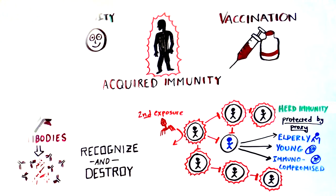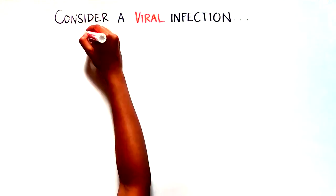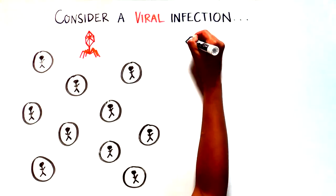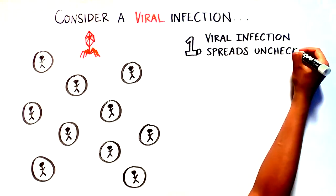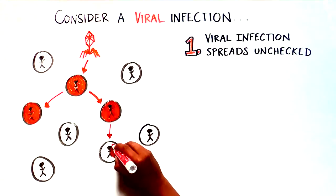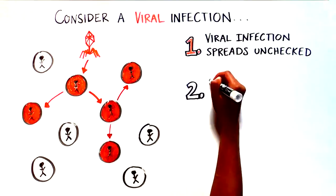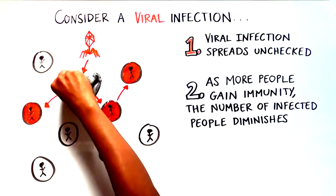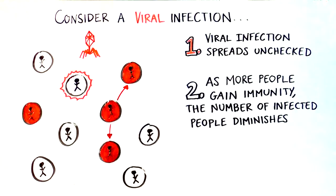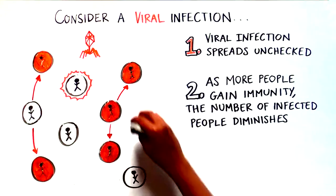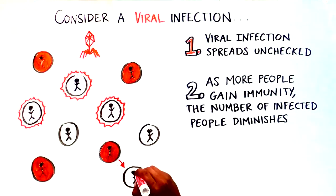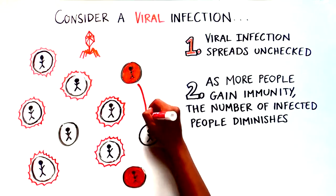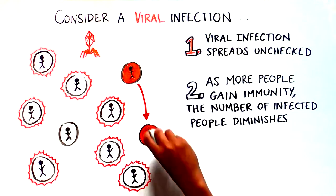Let's take a look at this idea visually, considering a viral infection. When a new virus enters a population with no immunity, it can spread unchecked because the people in that population don't have the protective antibodies. As more people gain immunity, the number of infected individuals diminishes. This decreases the likelihood that an infected person will transmit the disease to someone susceptible. At a certain point, the virus runs out of places to go and the spread of the virus is under control.